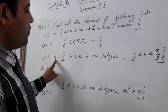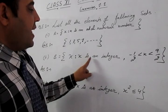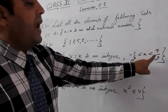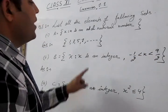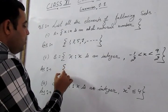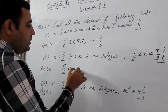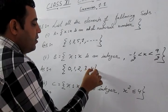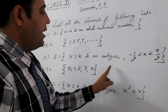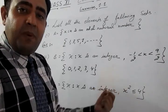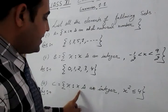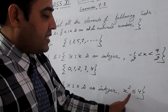Part B: x such that x is an integer, −½ < x < 9/2. The integers greater than −½ start from 0, and since 9/2 = 4.5, the integer just before 4.5 is 4. Therefore the answer is {0, 1, 2, 3, 4}.